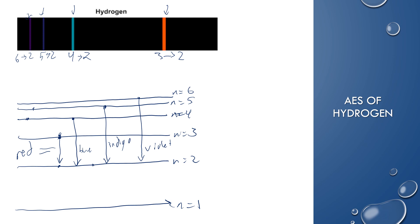So transitions to the first energy level emit UV radiation — much higher energy because there's a greater difference in the energy levels. Transitions down to the second energy level release visible light in those four distinct colors. Energy transitions down to the third energy level release infrared light, which is lower energy than visible. Scientists took this information from the spectra and worked backwards to figure out that electrons are moving in this way — and that's how they figured out the Bohr model.